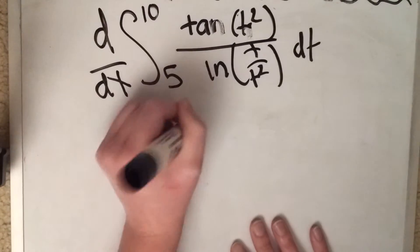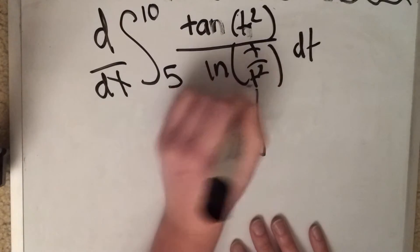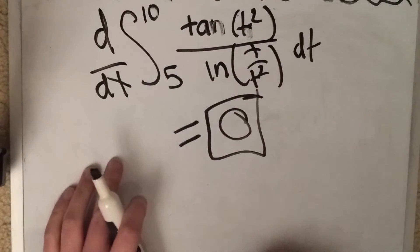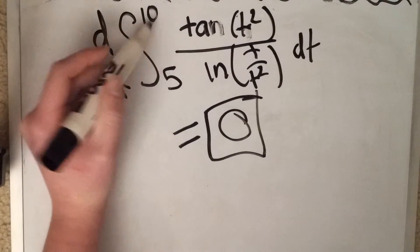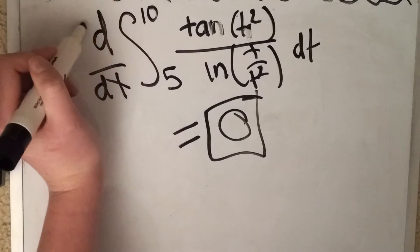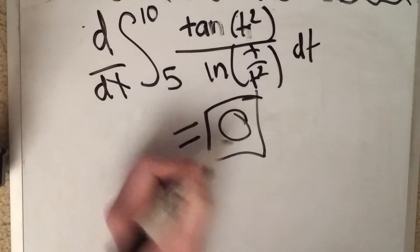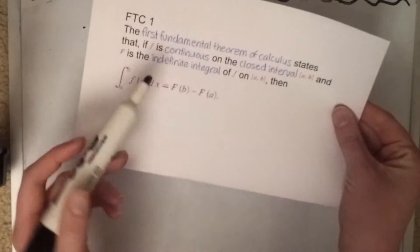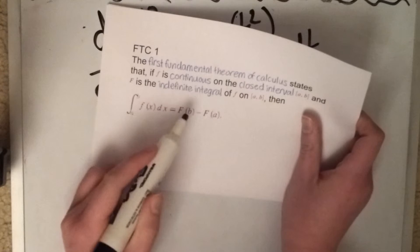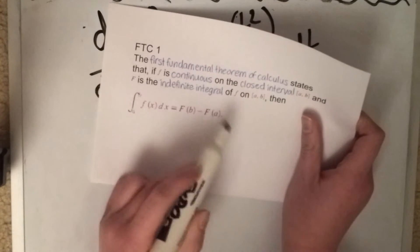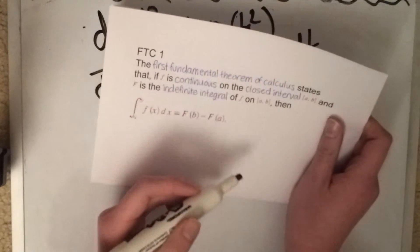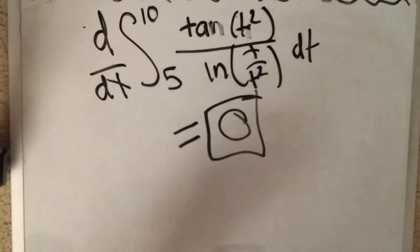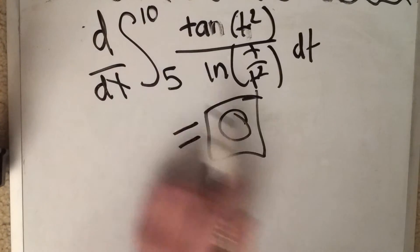This is going to equal zero, I can tell you right now. Why is this? Because, well, you don't use the FTC because there is no x over here, these are both constants. And what happens when you take the derivative of a constant? You get zero. So don't forget about FTC1, because it's going to be you're going to have f of b, which is just going to be a number, minus f of a, which is just going to be a number, and then a number minus a number is a number, the derivative of a number will always be zero.